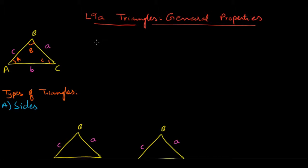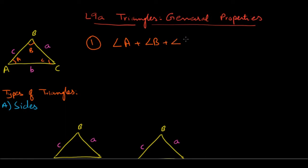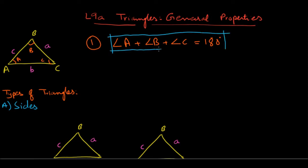The first property you really need to know is that the angles inside a triangle — angle A, angle B, and angle C — always sum up to 180 degrees. This is a very important fact that most of you probably already know, so you need to memorize it.